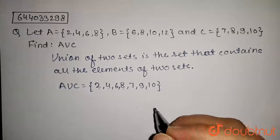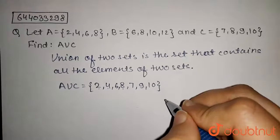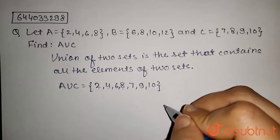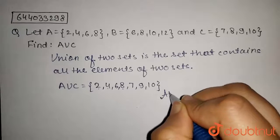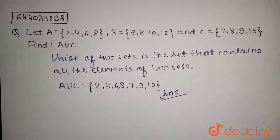So the answer of this question, A union C is equal to the set containing elements 2, 4, 6, 8, 7, 9, and 10. So this is the answer of this question.